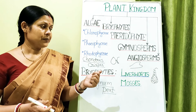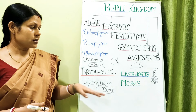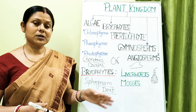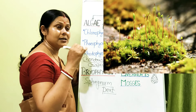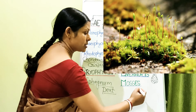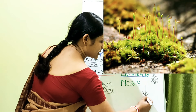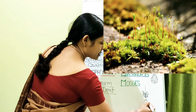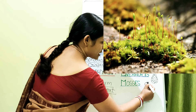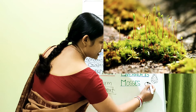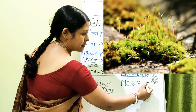Mosses are slightly more advanced than liverworts in that the plant body shows some differentiation — you can distinguish leaf-like, stem-like, and root-like structures. There are fine leaf-like structures and unicellular root-like structures, plus a capsule at the top which is the sporophyte. When the lid of the capsule dries up, spores inside are released into the surroundings.